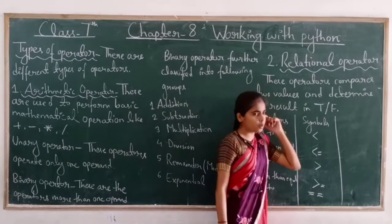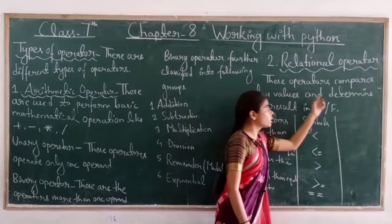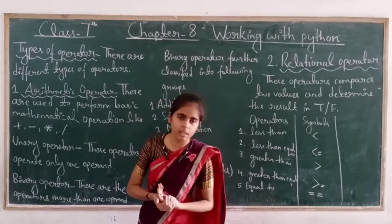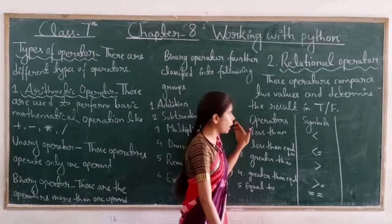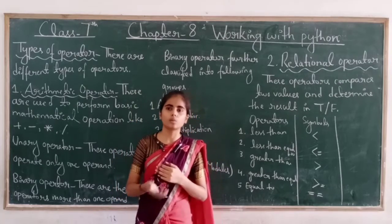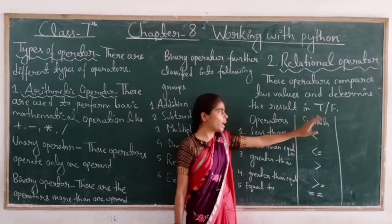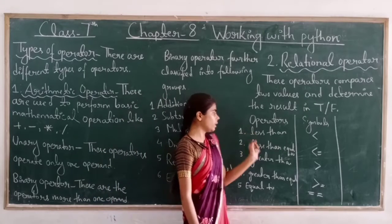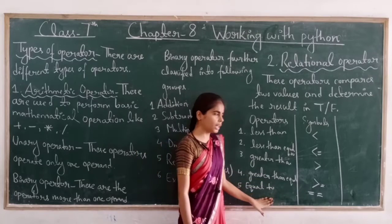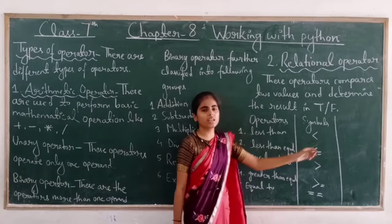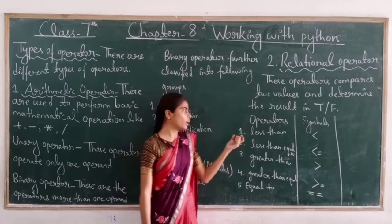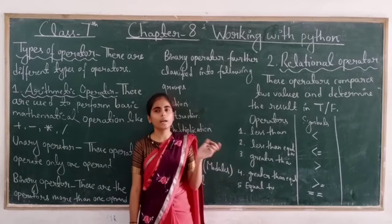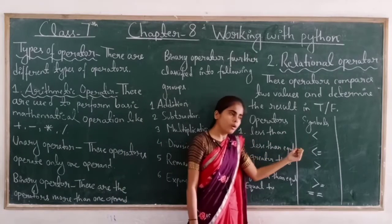Second is Relational Operators. These operators compare two values and determine the resulting true or false. When we need to compare two values, we use a Relational Operator. Relational operators always give output either as true or false. There are five relational operators: Less Than, Less Than or Equal To, Greater Than, Greater Than or Equal To, and Equal To. If the condition is true, the result will be true; otherwise, it will be false.